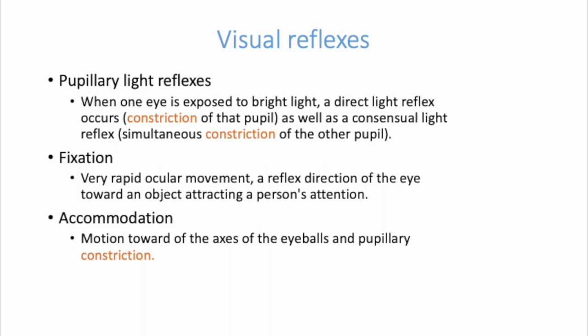Now let's talk about the reflexes. The first is the pupillary light reflex — when we shine a bright light in the eye, we have both a direct and a consensual reflex. If you're shining the light on the left eye, that's your direct reflex of constriction. However, when you shine the light on the left eye, you look the second time at the right eye, because that eye should also constrict. This is the consensual — they do this constriction together.